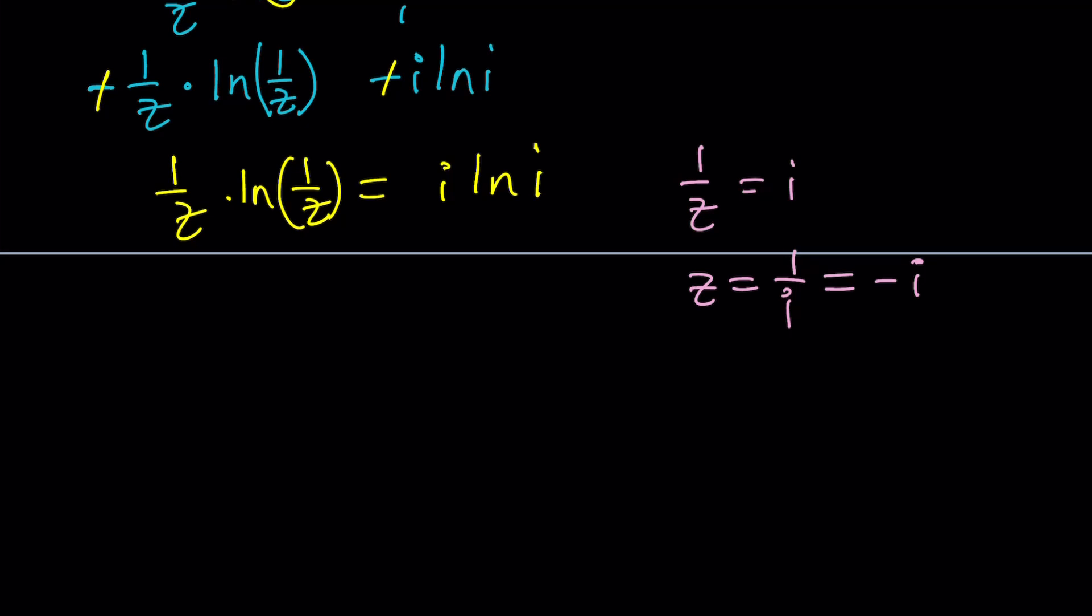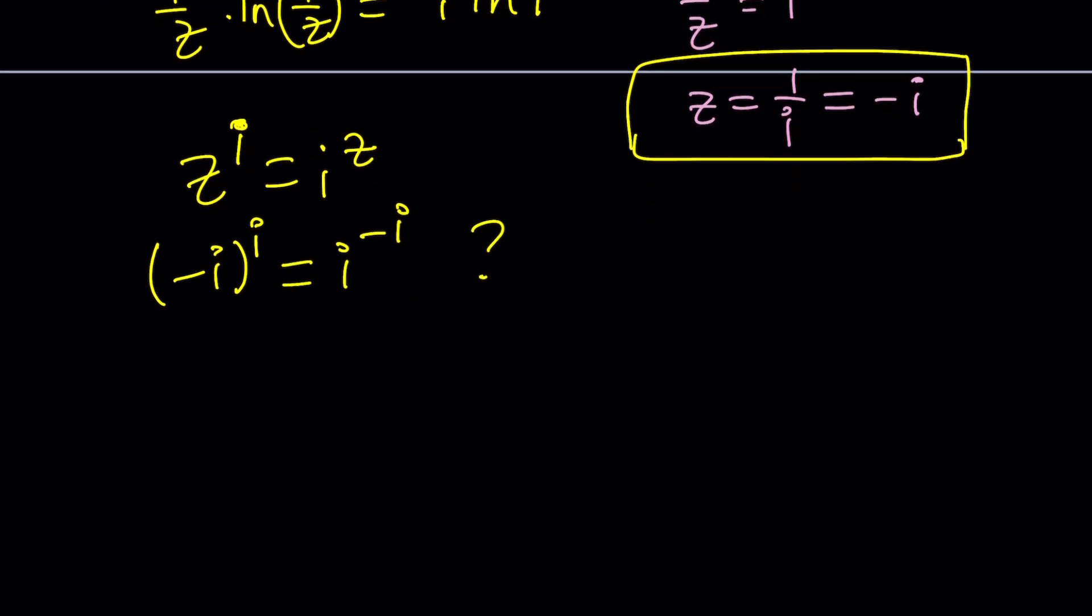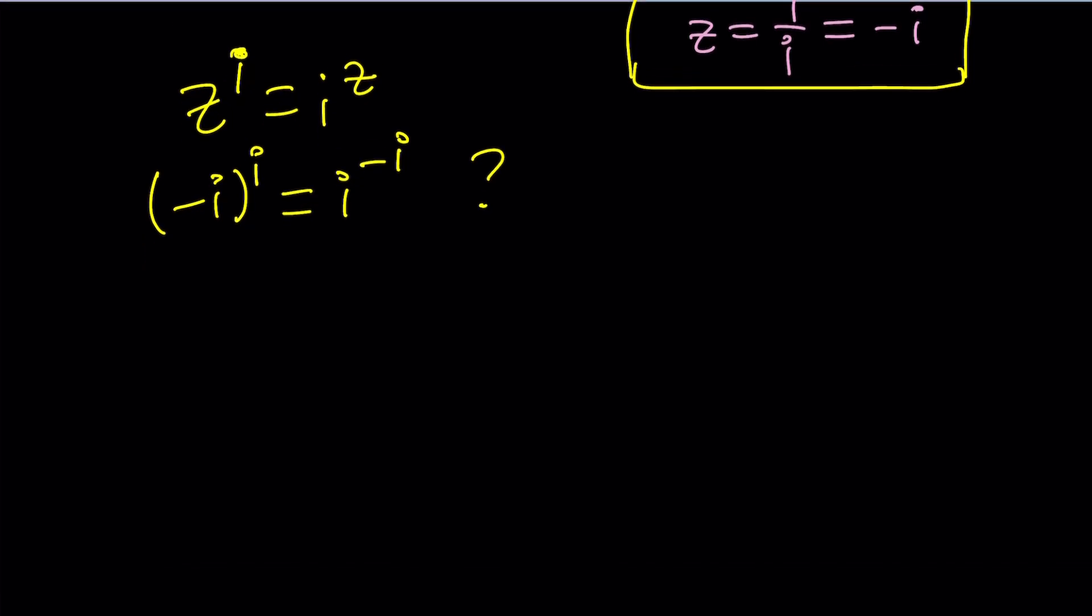Now, before we do that, though, I want to check because I was skeptical, too. I didn't think Z equals negative I would work. But here's the thing. We have Z to the I equals I to the Z. And let's go ahead and check out negative I. So, is it true that negative I to the power I is the same as I to the power negative I? Does that look true to you? Do you think that's possible? Let's check it out.